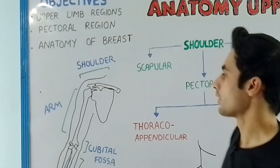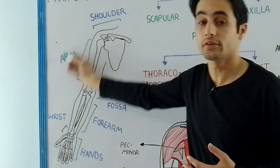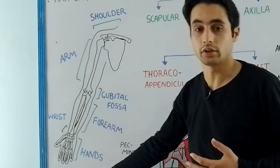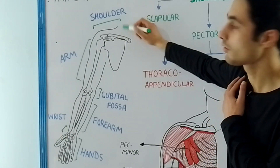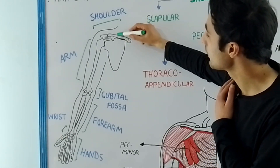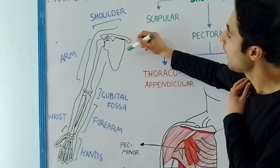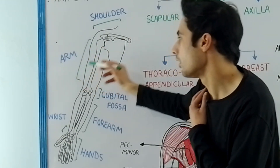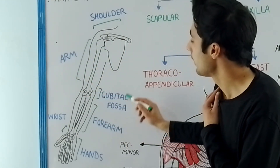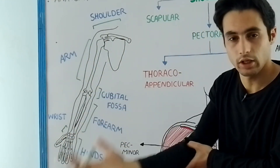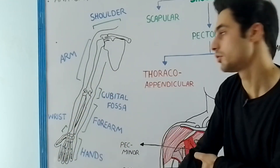The whole upper limb is divided into seven main regions, starting with the shoulder, which consists of the clavicle bone — the beauty bone — and the scapula. Then in the arm we have the humerus bone, and the cubital fossa, which is present in front of your elbow joint.